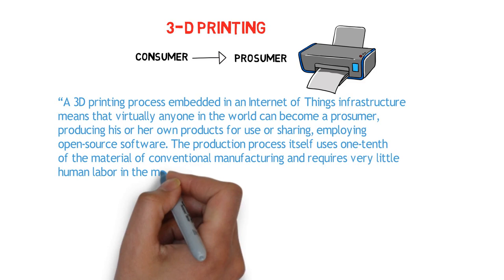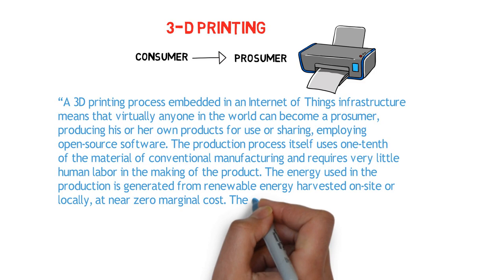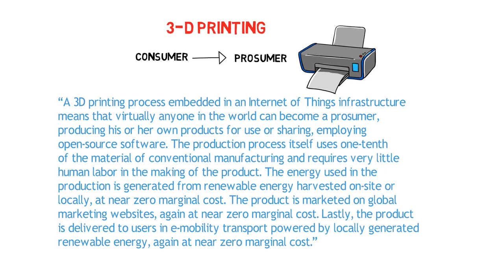Quoting the author: a 3D printing process embedded in an internet of things infrastructure means that virtually anyone in the world can become a prosumer, producing his or her own products for user sharing, employing open source software. The production process itself uses one tenth of the material of conventional manufacturing and requires very little labor. The energy used is generated from renewable energy harvested on site or locally at near zero marginal cost. The product is marketed on global marketing websites again at near zero marginal cost. Lastly, the product is delivered to users in e-mobility transport powered by locally generated renewable energy again at near zero marginal cost. And that pretty well sums up what this new infrastructure will look like.